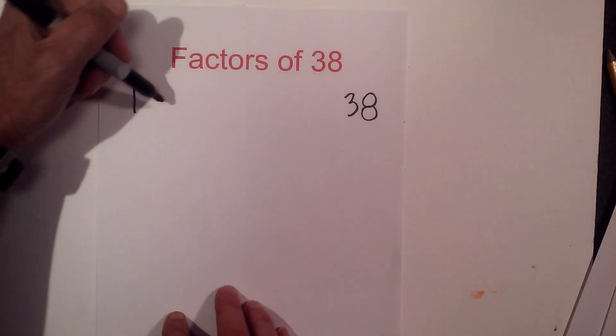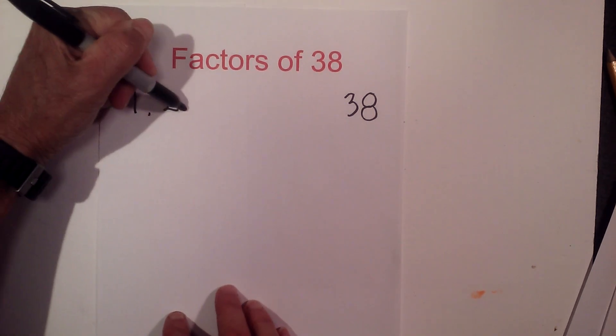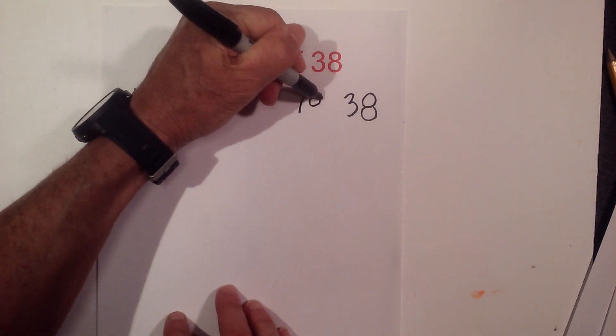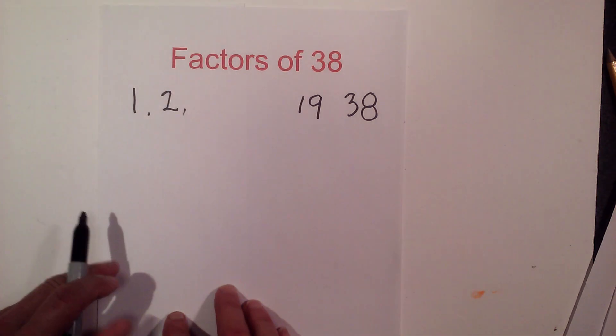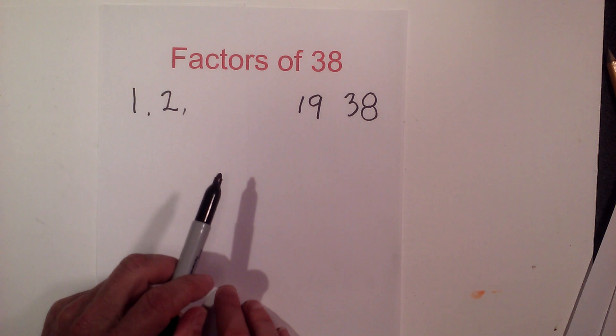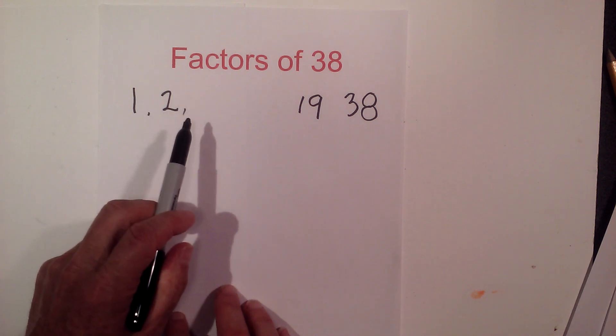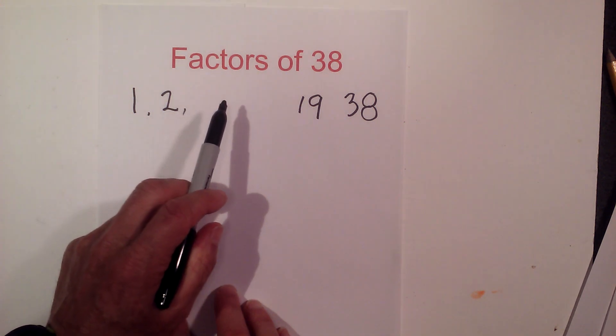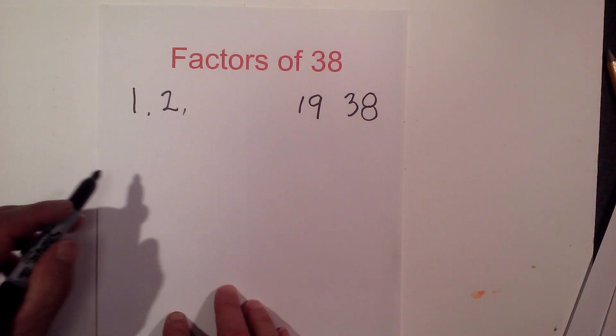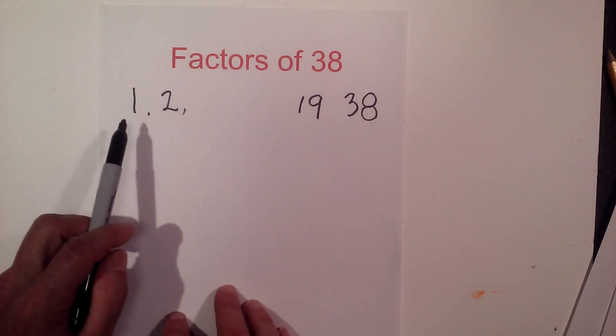2 times 19 equals 38. And then 3 does not go into 38, 4 does not go into 38, nor does 5, 6, 7, 8, 9, or 10. So the factors of 38 are pretty easy: 1, 2, 19, and 38.